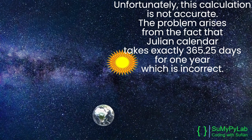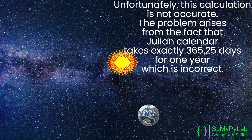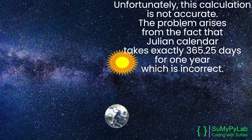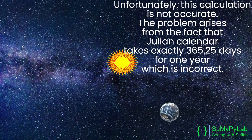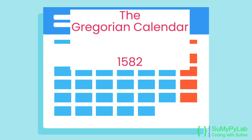Unfortunately, this calculation is not accurate. The problem arises from the fact that the Julian calendar takes exactly 365.25 days for one year, which is incorrect. We have learned a lot about the Julian calendar. Now let's come to our main topic: the Gregorian calendar, which was introduced in 1582 by Pope Gregory XIII to eliminate or minimize the inaccuracies of its predecessor, the Julian calendar.